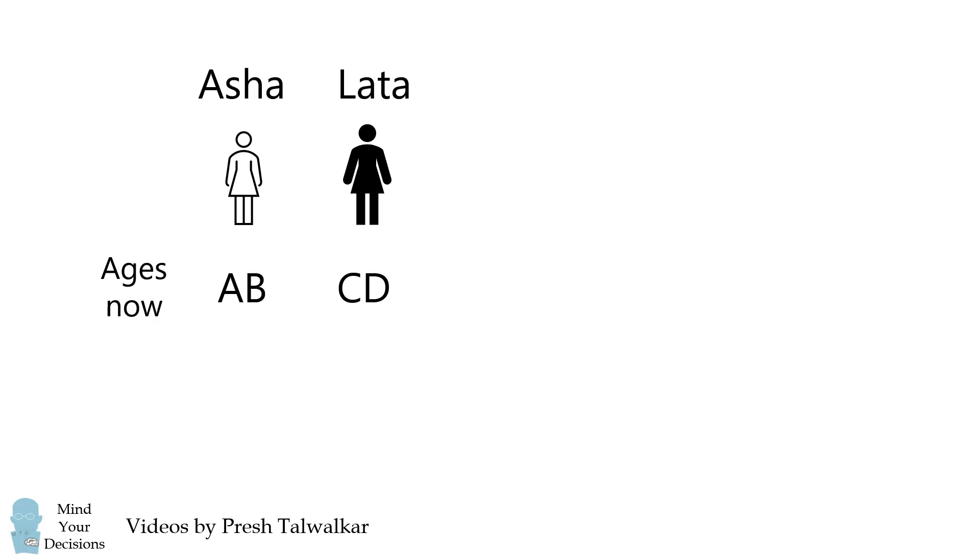If you write Latha's age after Asha's age, you get the four-digit number ABCD, and it happens to be a perfect square number.